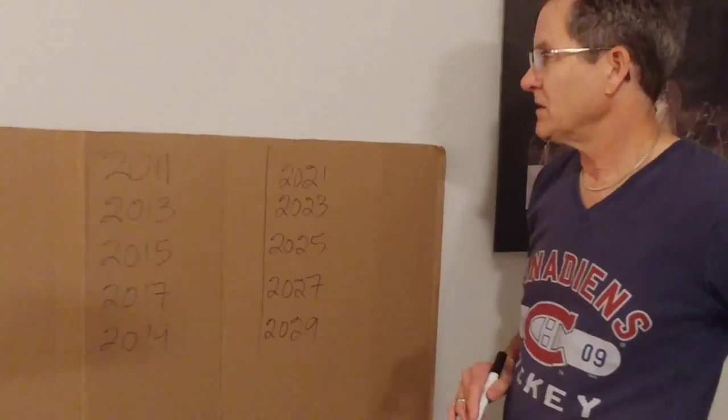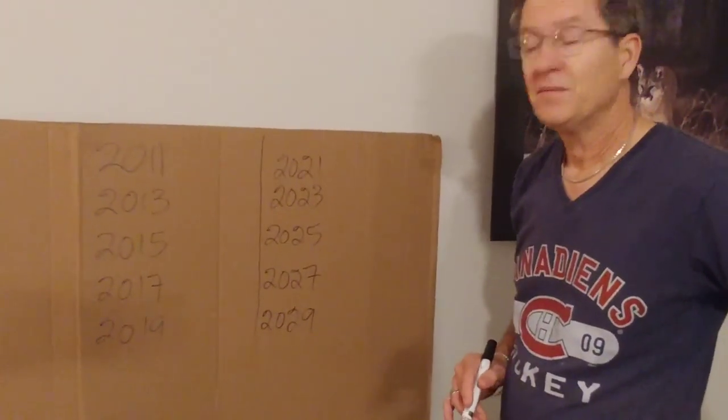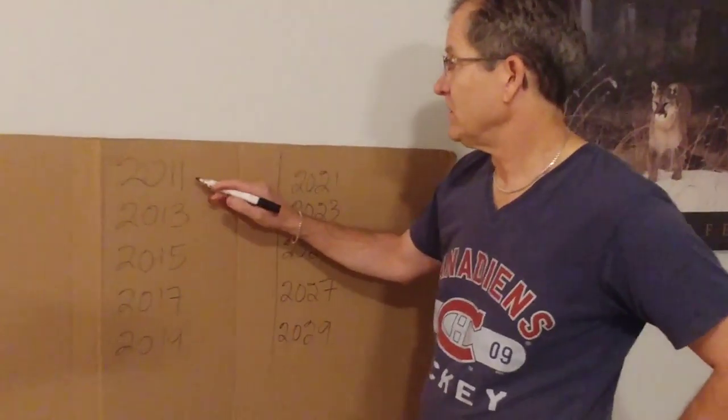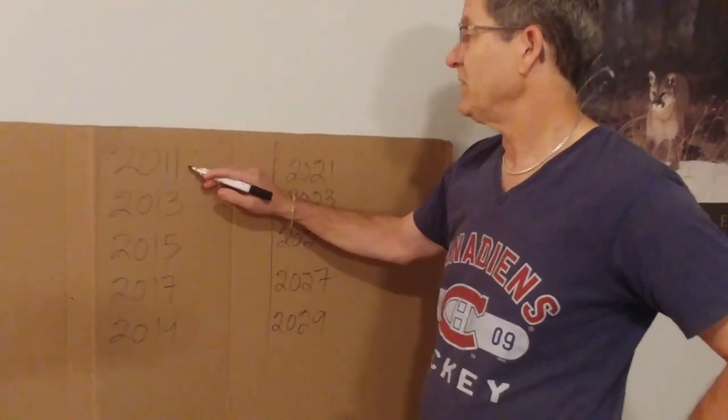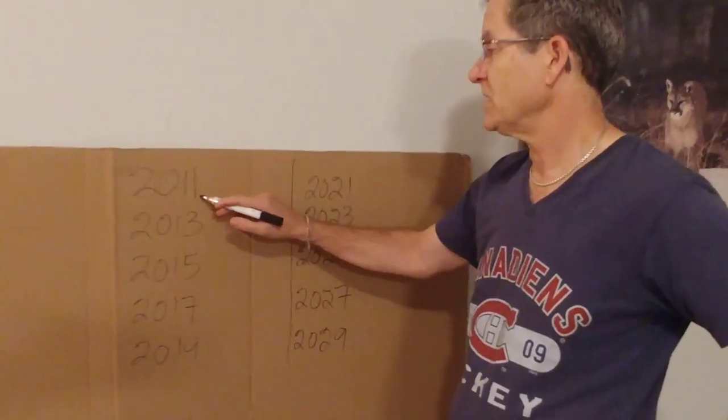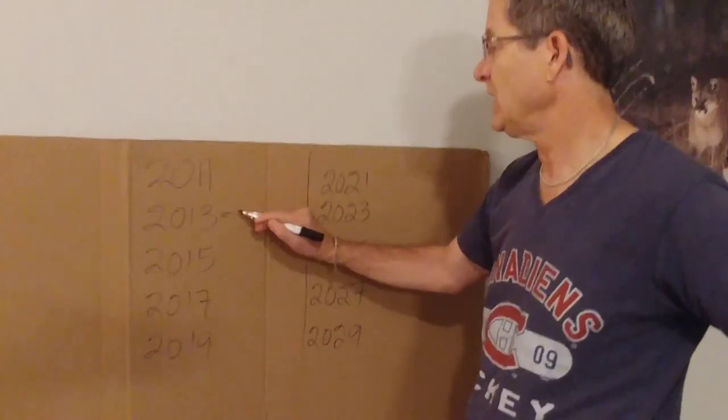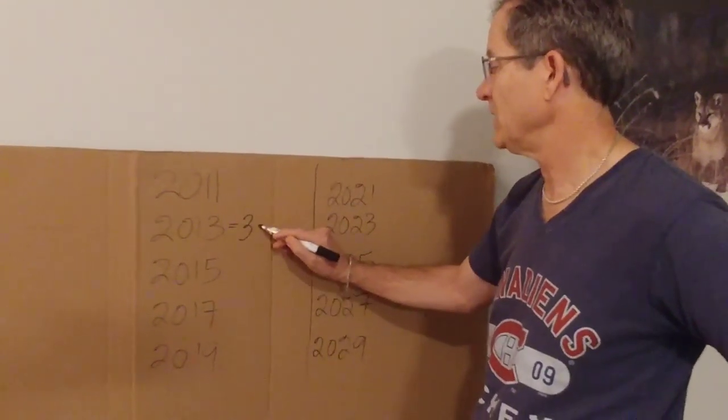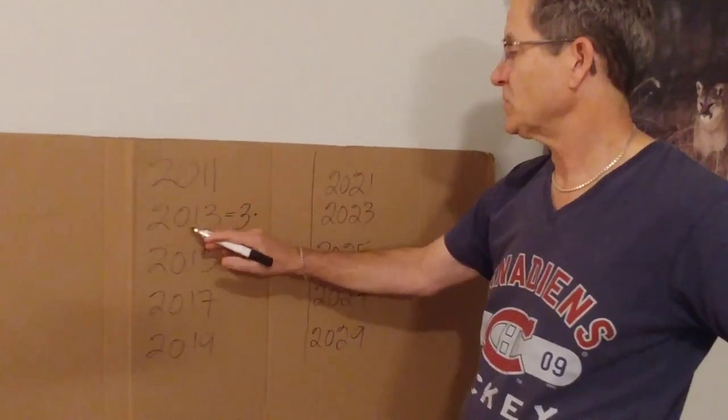Of course I'm only going to use the odd numbers because even numbers are divisible by two and are not prime. 2011 is not divisible by three because the sum of the digits is only four, but 2013 is divisible by three because two plus zero plus one plus three is six.